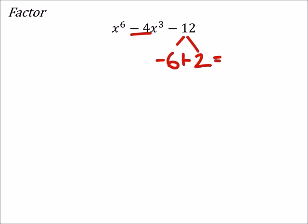So when I add these two together I get negative four, which means I can split that four X cubed up into a negative six X cubed and plus a two X cubed.